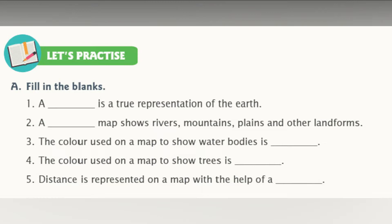Practice time. Fill in the blanks. A dash is a true representation of the earth — answer is globe. A dash map shows rivers, mountains, plains and other landforms — answer is physical map. The color used on a map to show water bodies is blue. The color used on a map to show trees is green. Distance is represented on a map with the help of a scale.